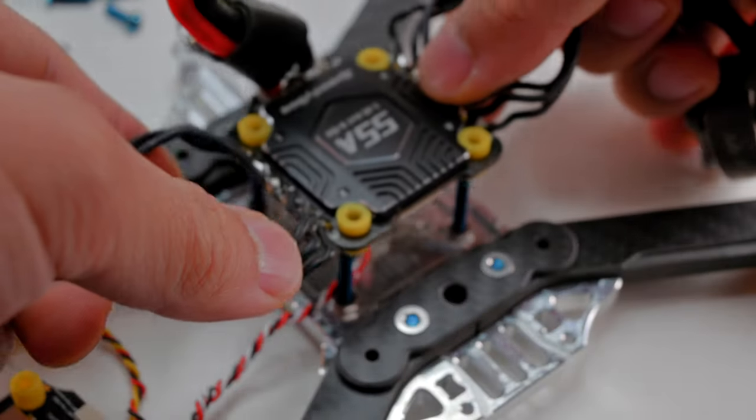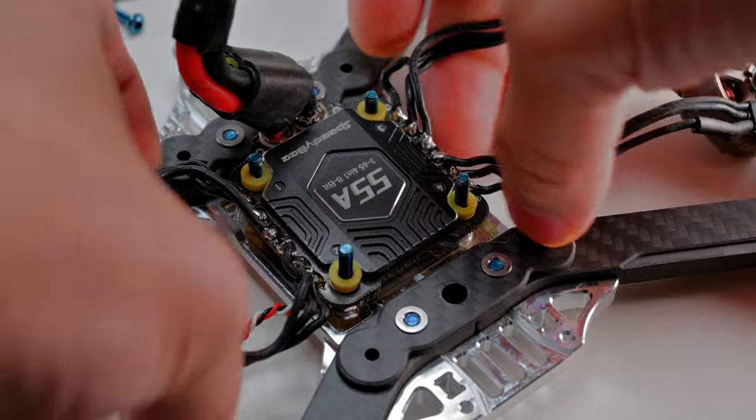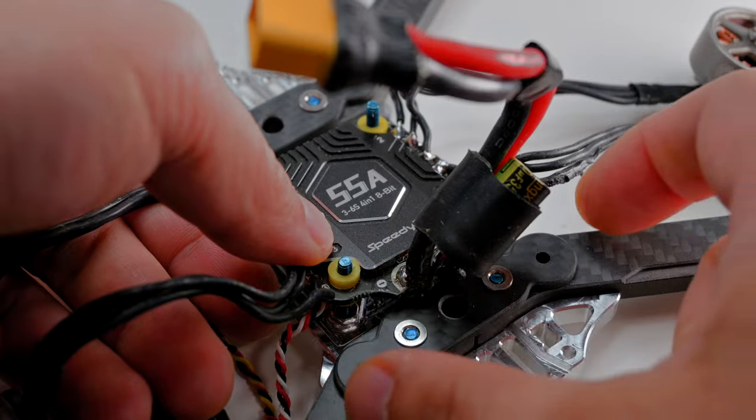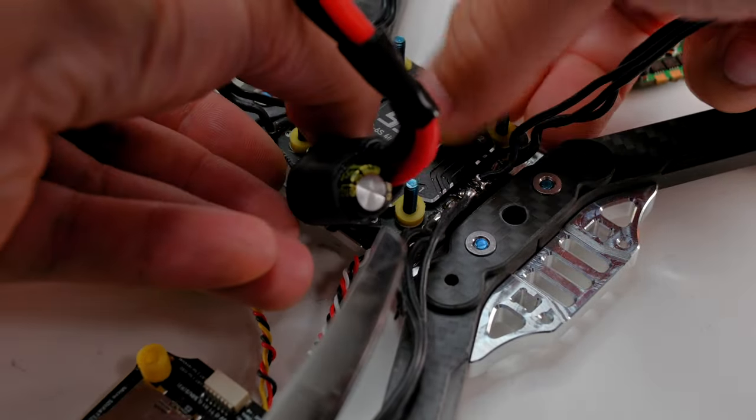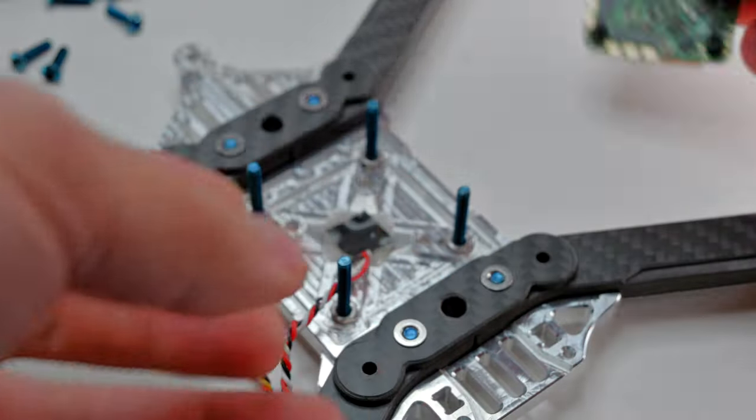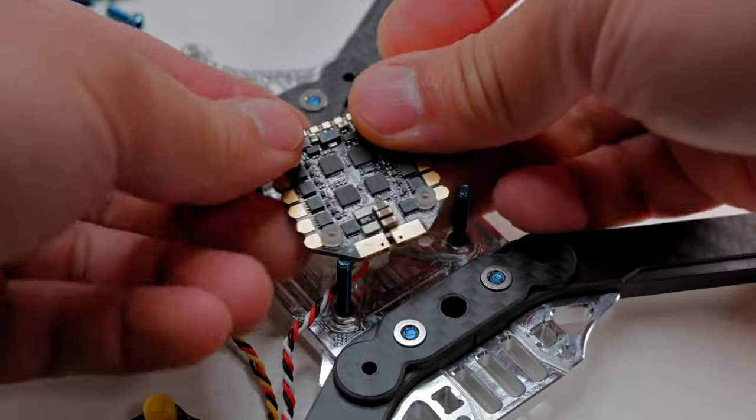So if you're using a really big stack like this one, you can't put the cap or the pigtail directly in the front or the back. In the back, the VTX is in the way. And in the front, the camera cage is in the way. So the only way is to have the pigtail coming out from the side. But if you use an AIO, it's no problem. There's a lot of space. But if you use a mini stack, it's no problem at all as well. You can install it however you like.